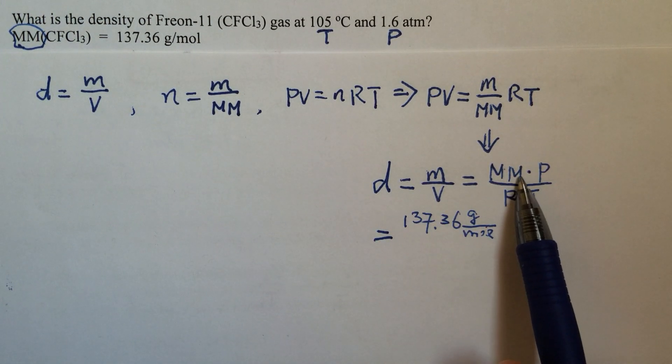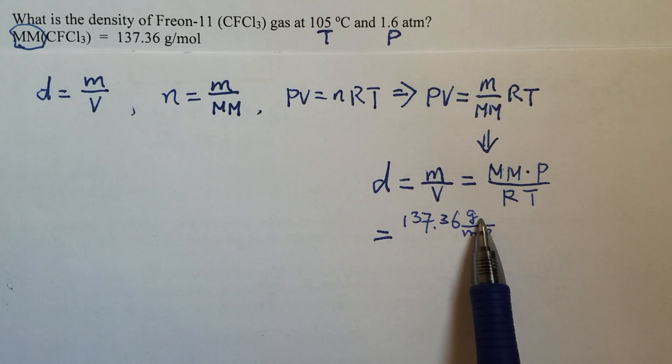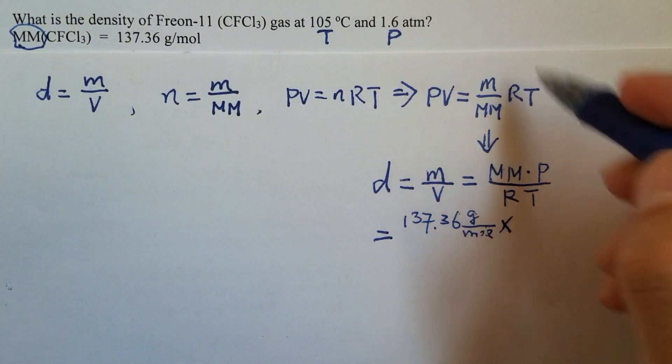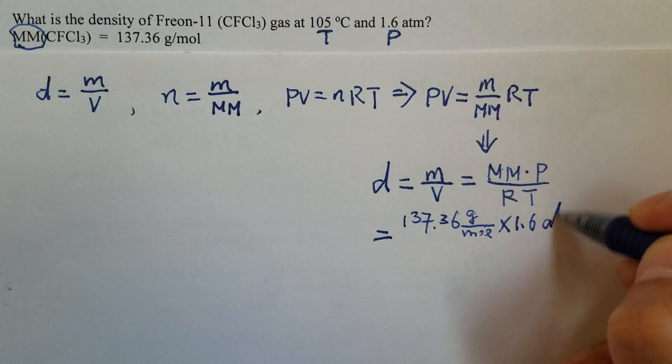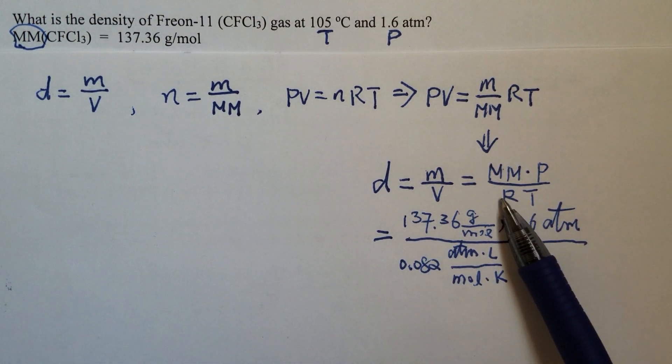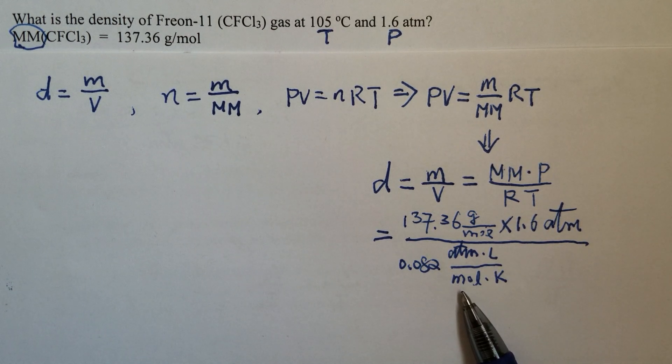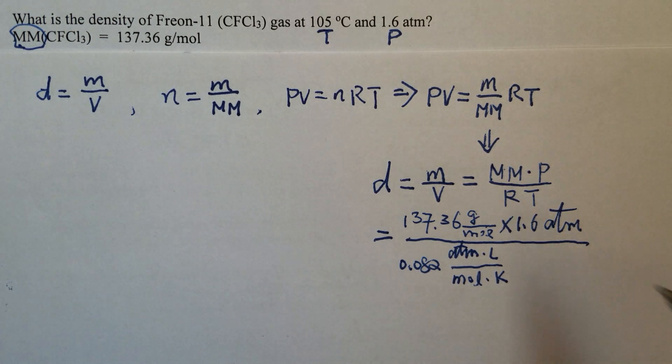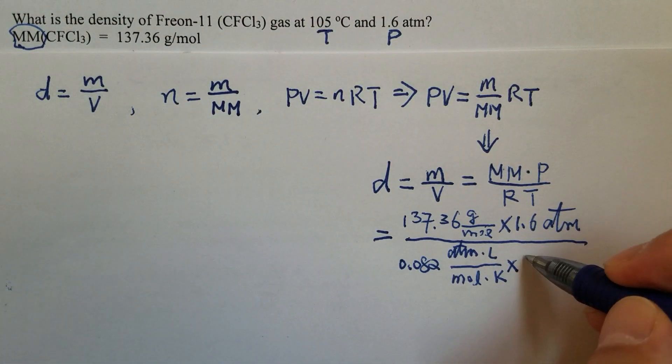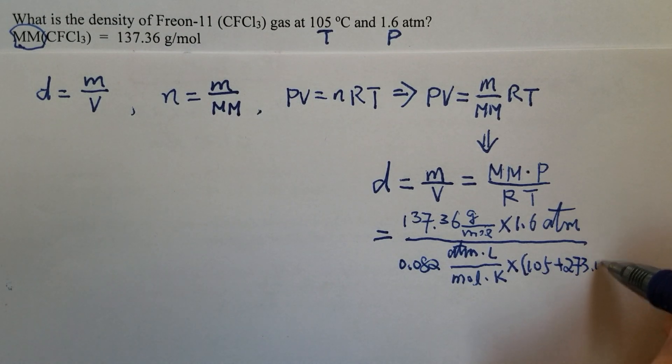d equals molar mass, which is 137.36 grams per mole, times pressure, which is 1.6 atmosphere, divided by R, 0.082 atmosphere per mole Kelvin, then times T. T is 105 degrees Celsius, but we have to convert that to Kelvin scale.